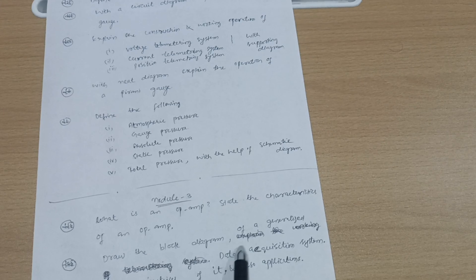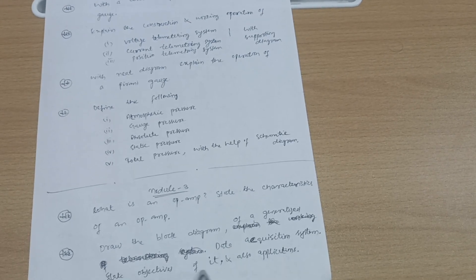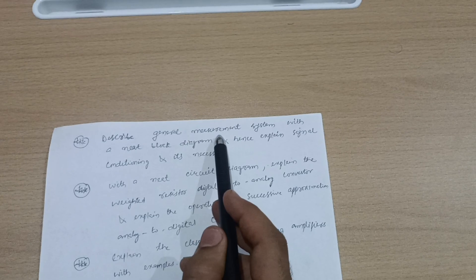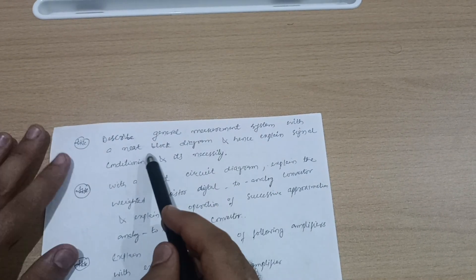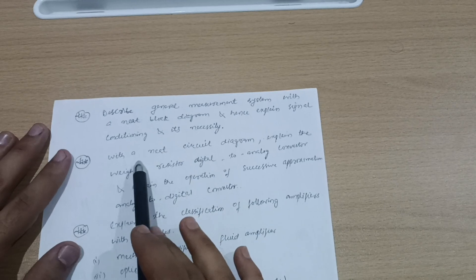Draw the block diagram of a generalized data acquisition system, state objectives of it and its applications. Describe general measurement system with a neat block diagram and hence explain signal conditioning and its necessity.